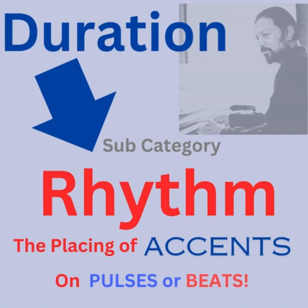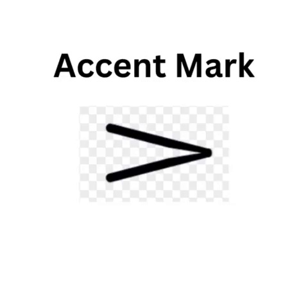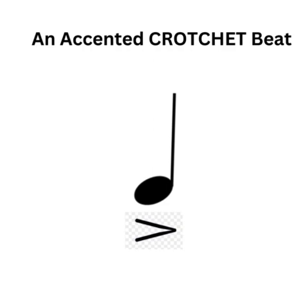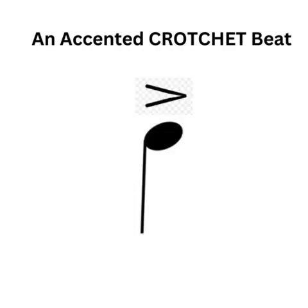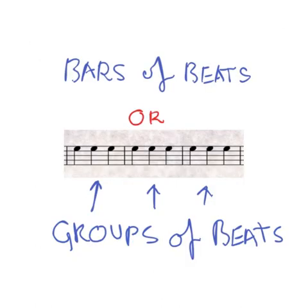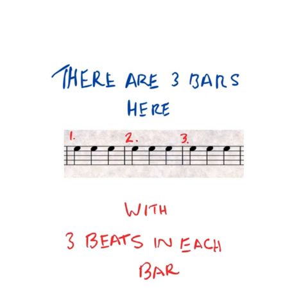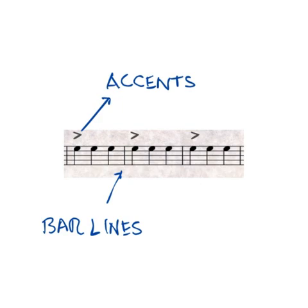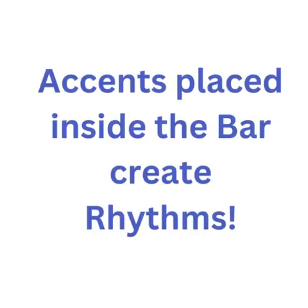Please notice the accent mark placed on the beat. A bar contains a group of beats, and there are bar lines at the beginning and end of a bar. The group of beats is repeated over and over again, producing many bars as required by the melody. Whether or not accents are indicated on the beats inside a bar, it is taken for granted that there is always an accent on the first beat of any bar.